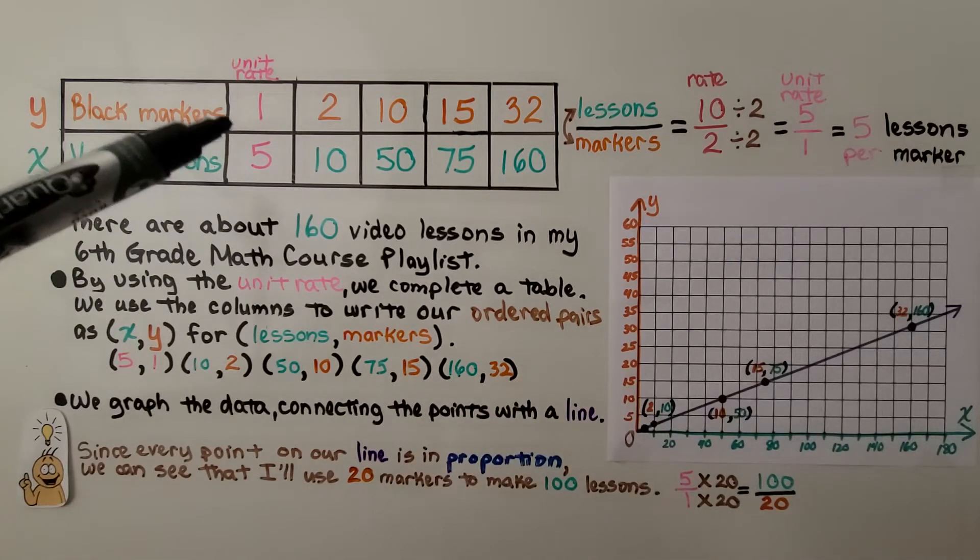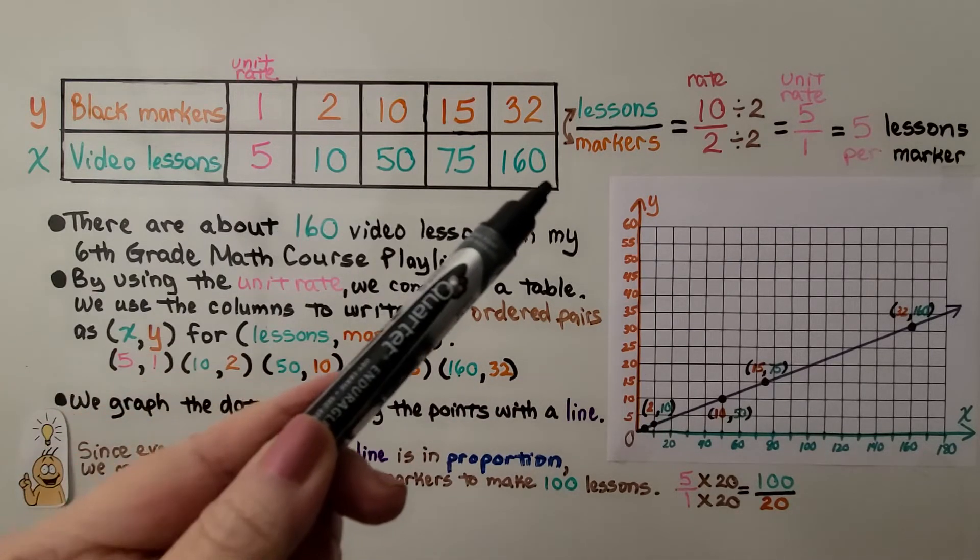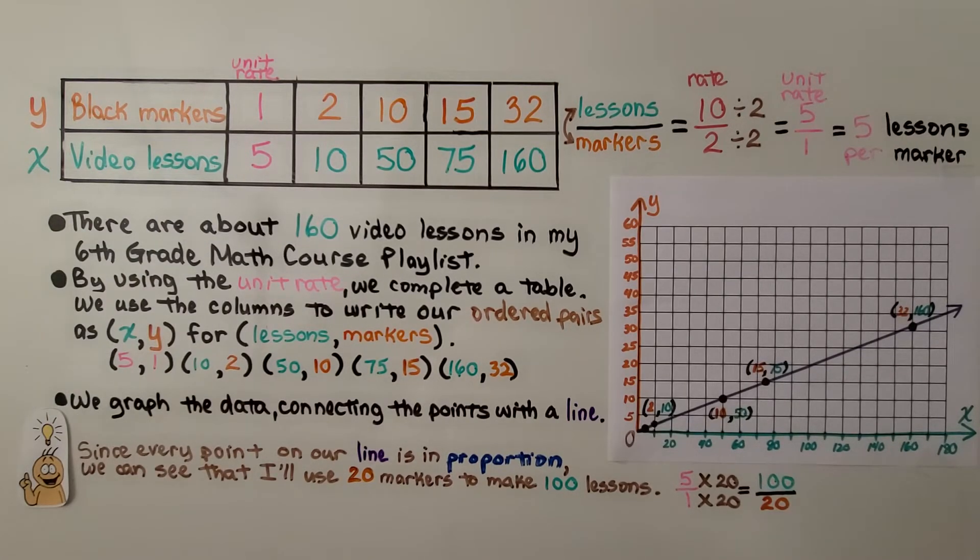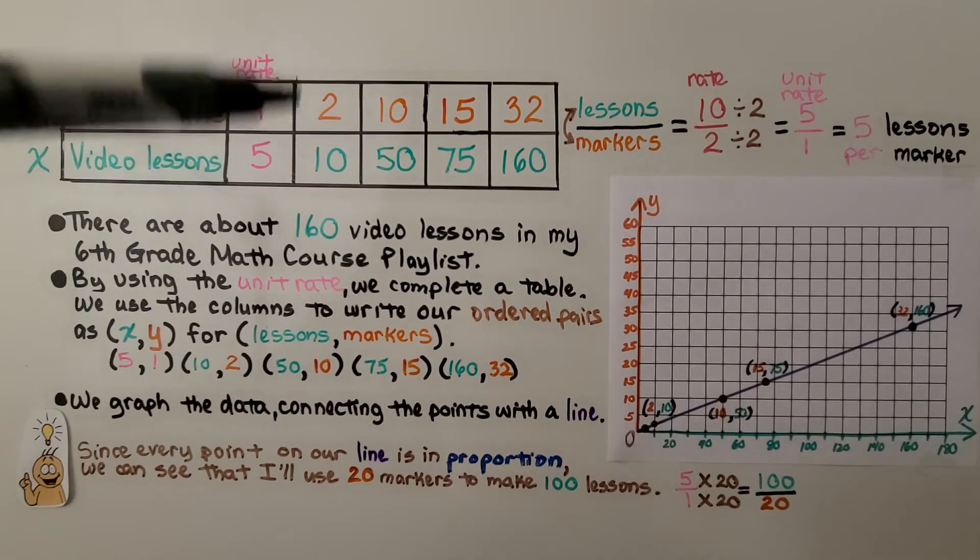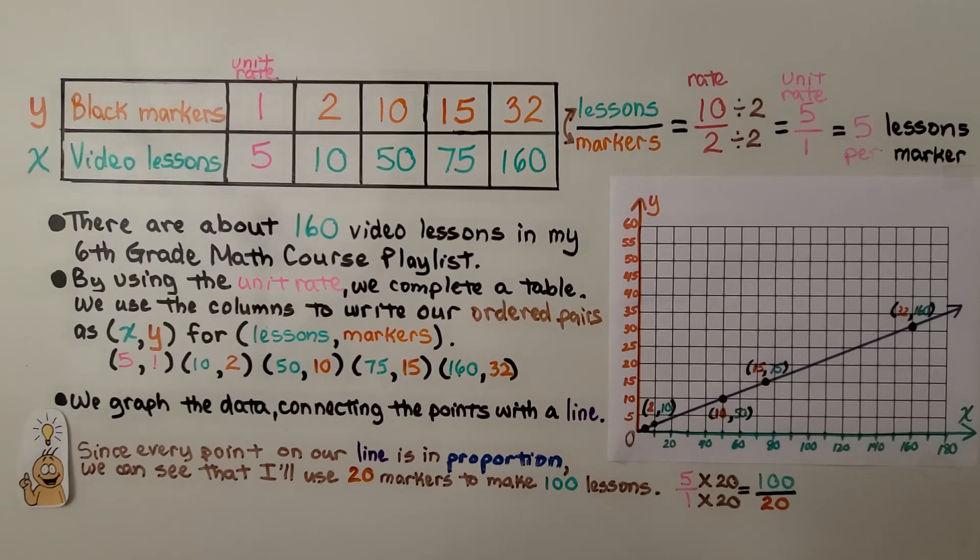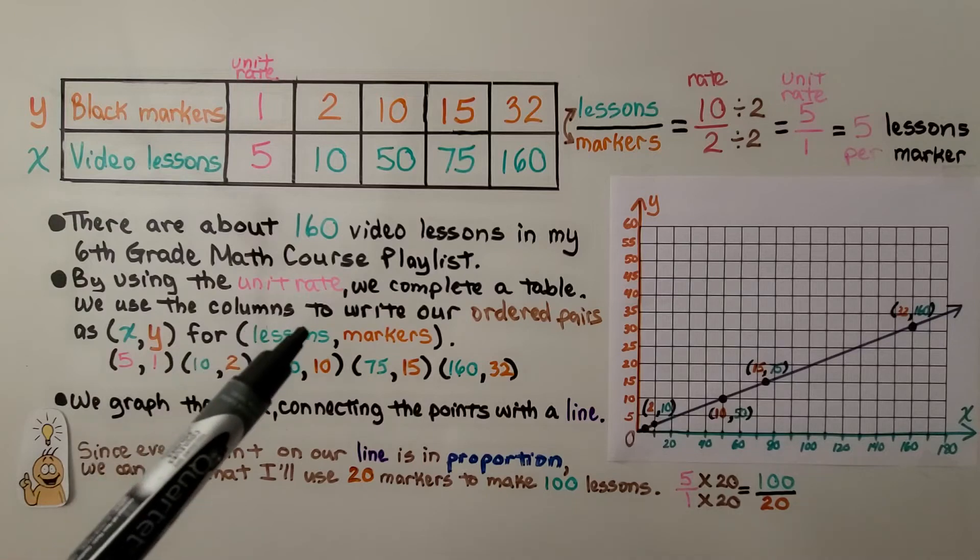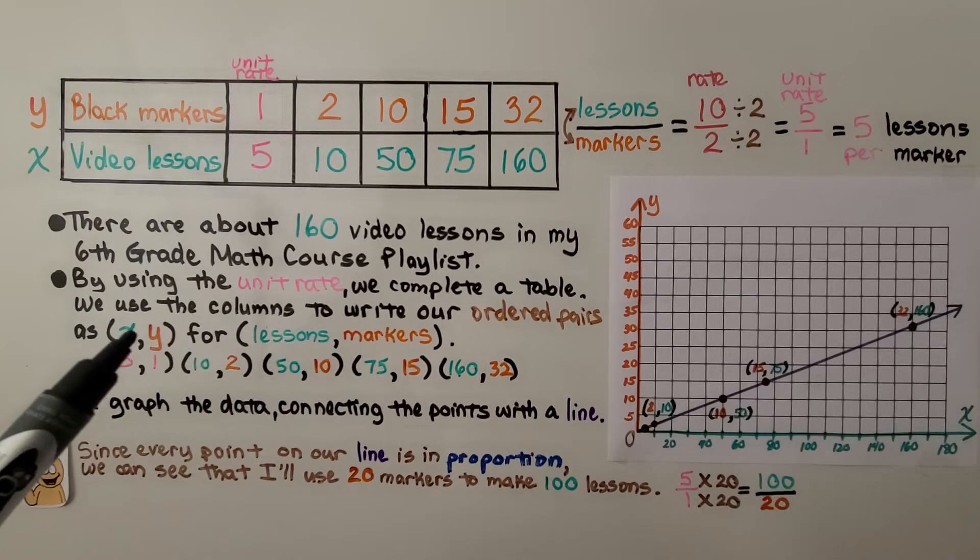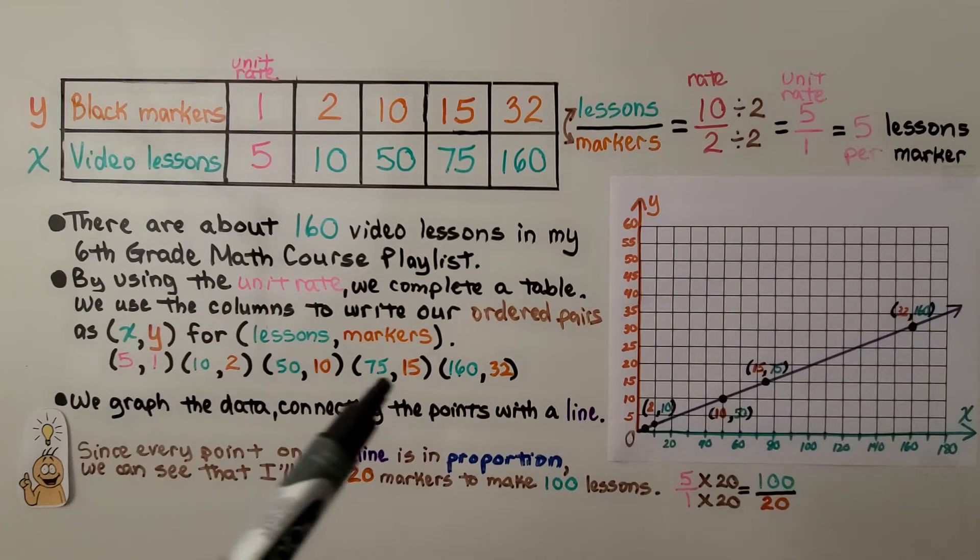So, now we know our unit rate, we can complete a table. There are about 160 video lessons in my sixth grade math course playlist. By using the unit rate, we complete a table. We use the columns to write our ordered pairs as X and Y for lessons and markers. Remember the X comes first, so the lessons are first, and then the markers. We write our ordered pairs and we graph the data.